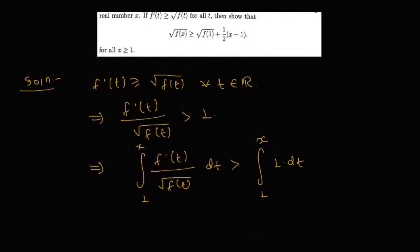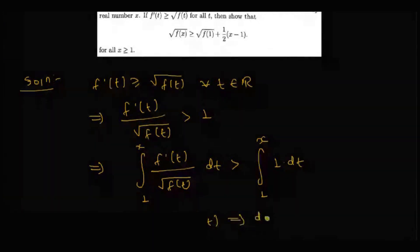Now put Y is equal to F T. Then DY is equal to F dash T DT, correct? So this thing becomes...